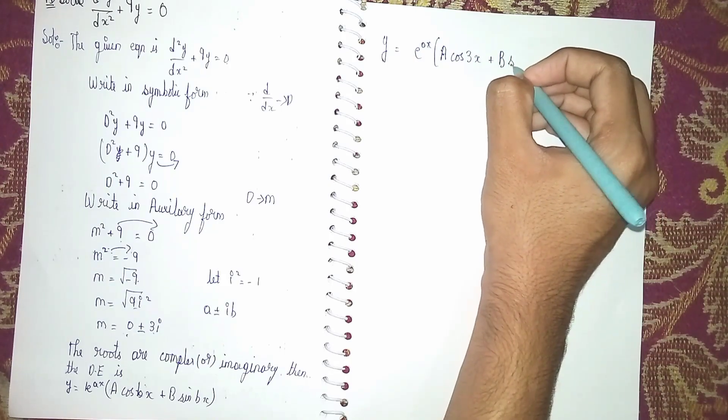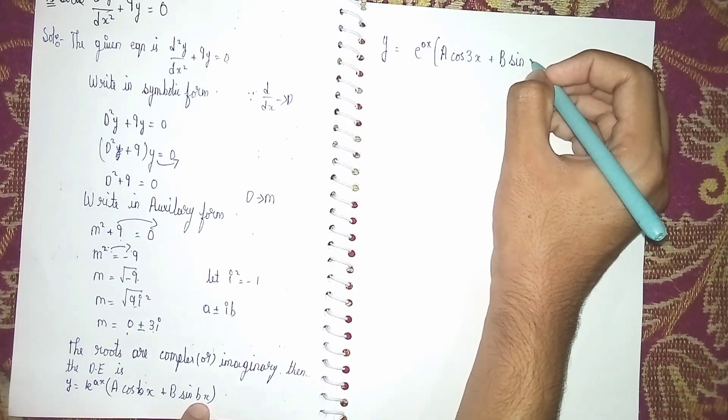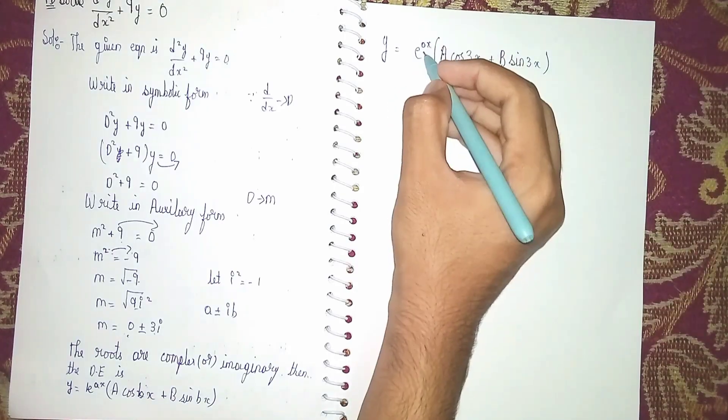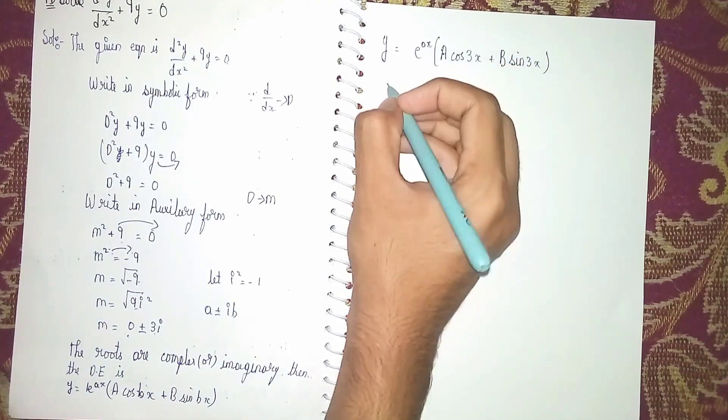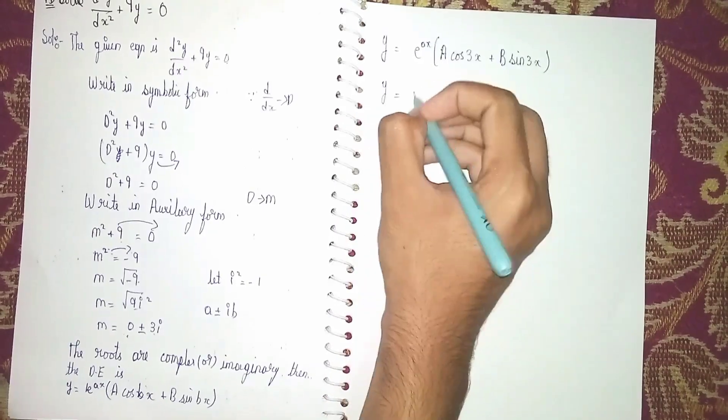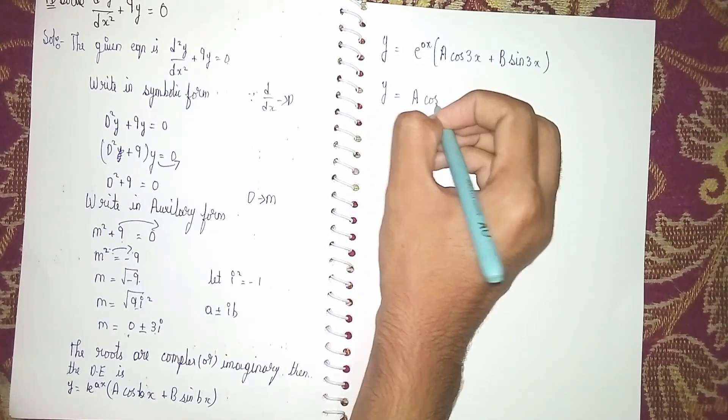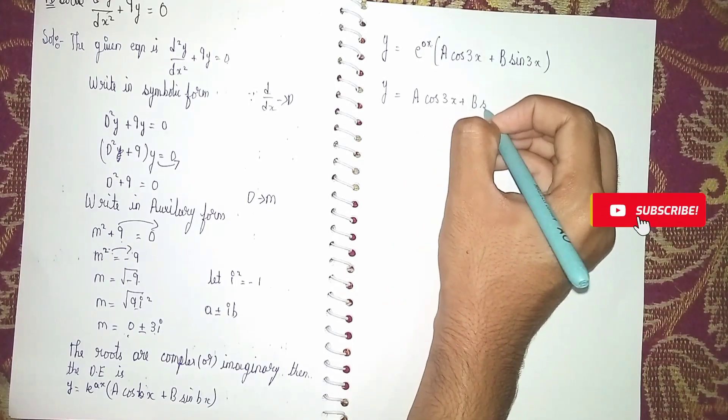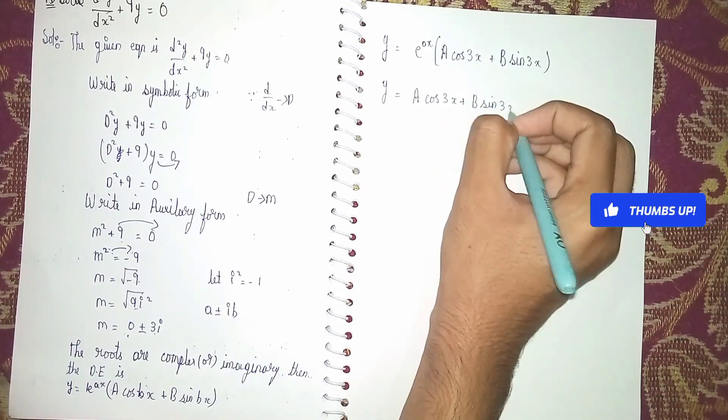Now e^(0x) is 1 only. At last our answer is y = a·cos(3x) + b·sin(3x). This is our answer. Thanks for watching.